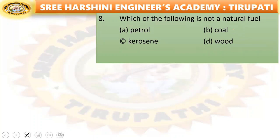Next: which of the following is not a natural fuel — petrol, coal, kerosene, or wood? Kerosene is not a natural fuel. The remaining options — coal and wood — are natural fuels.